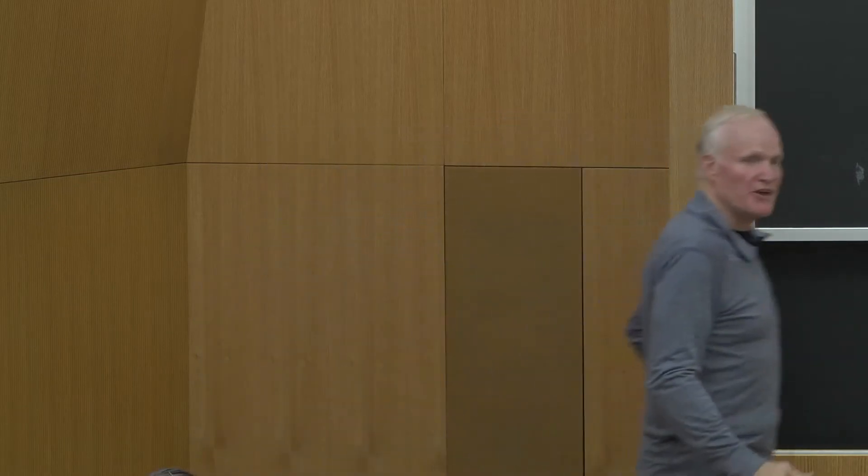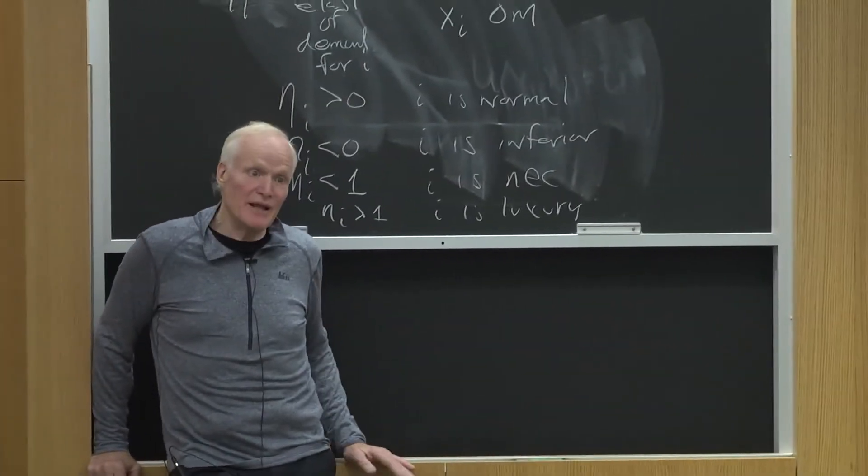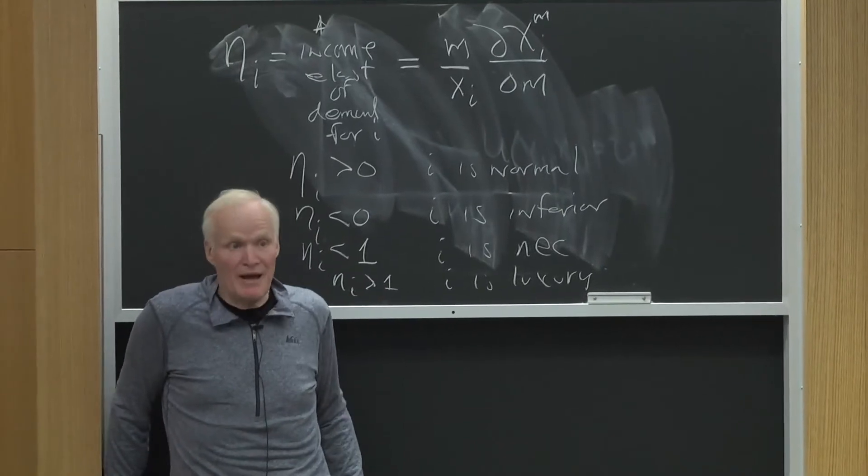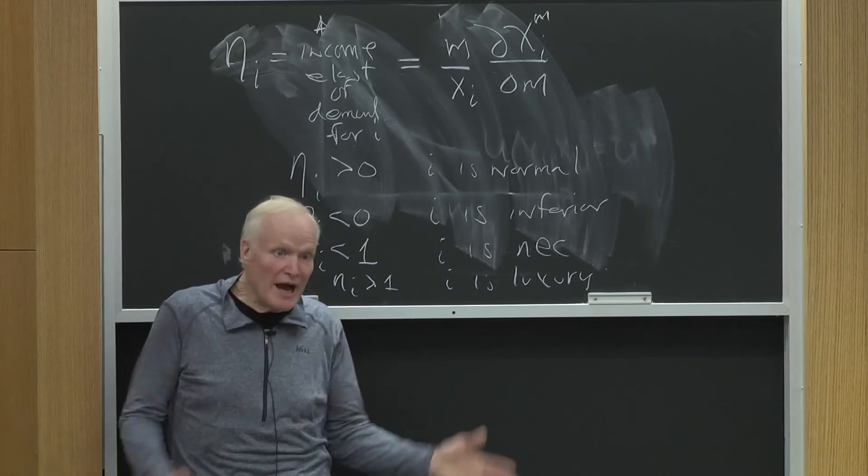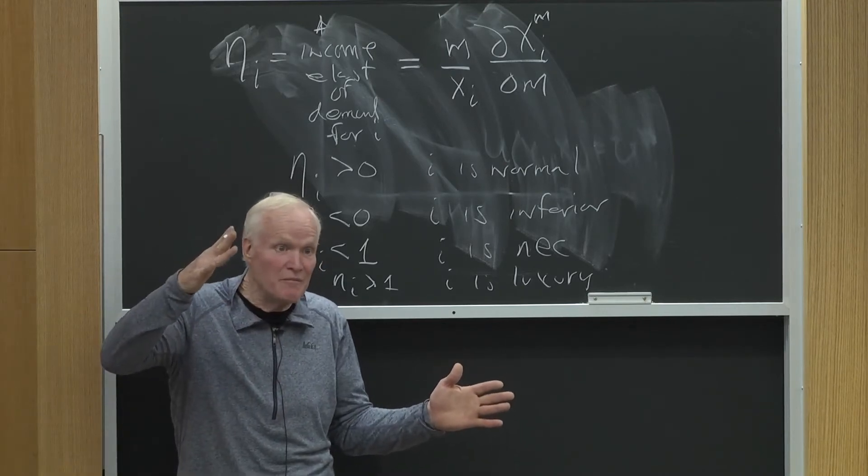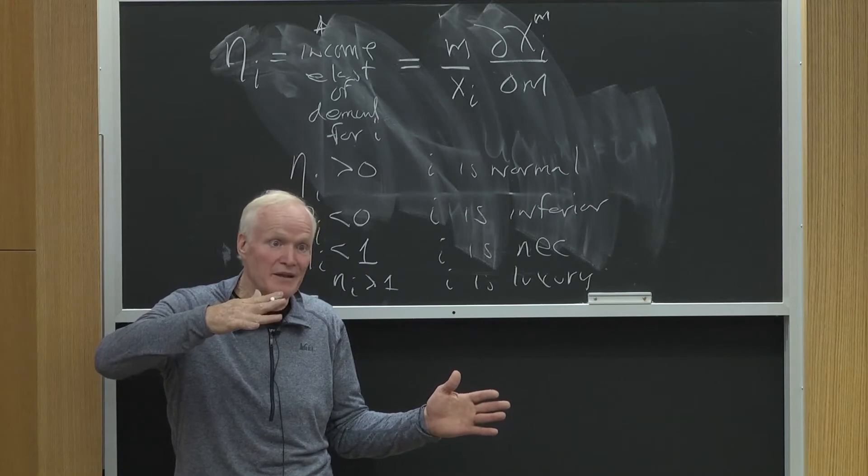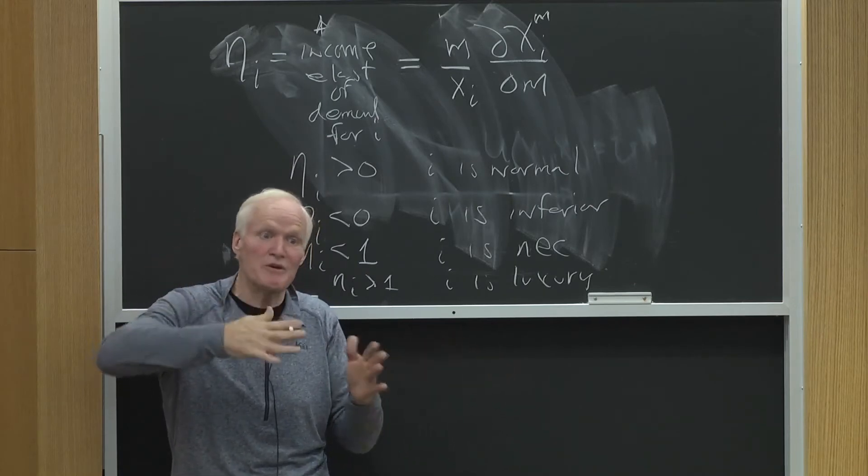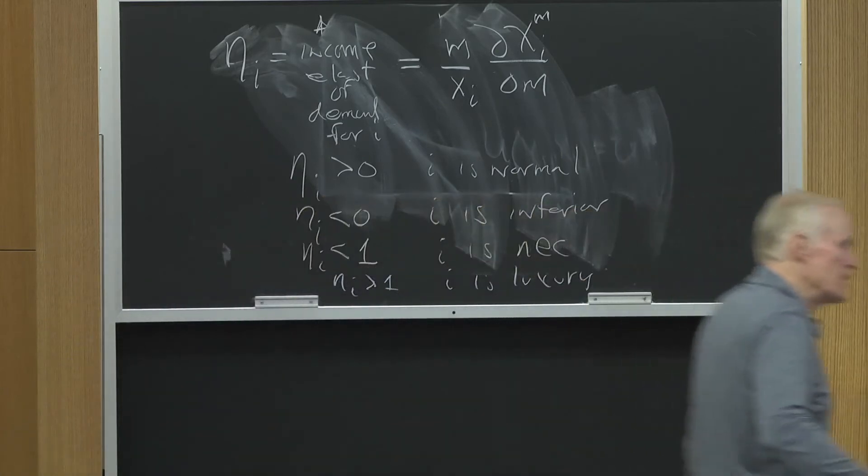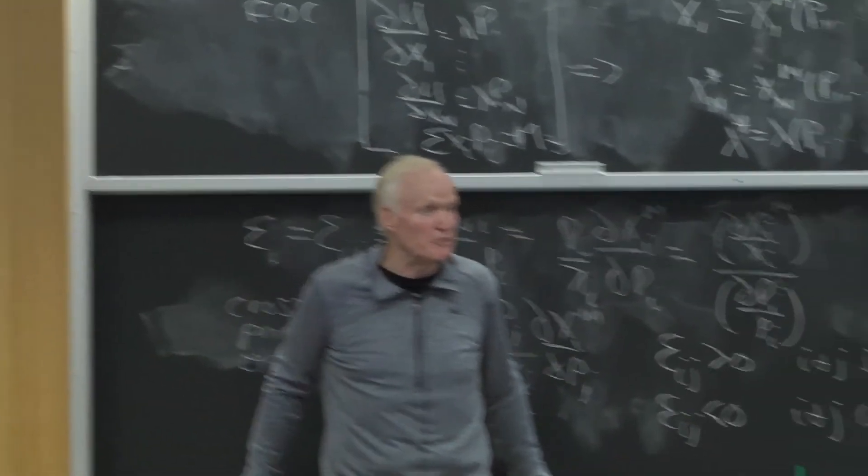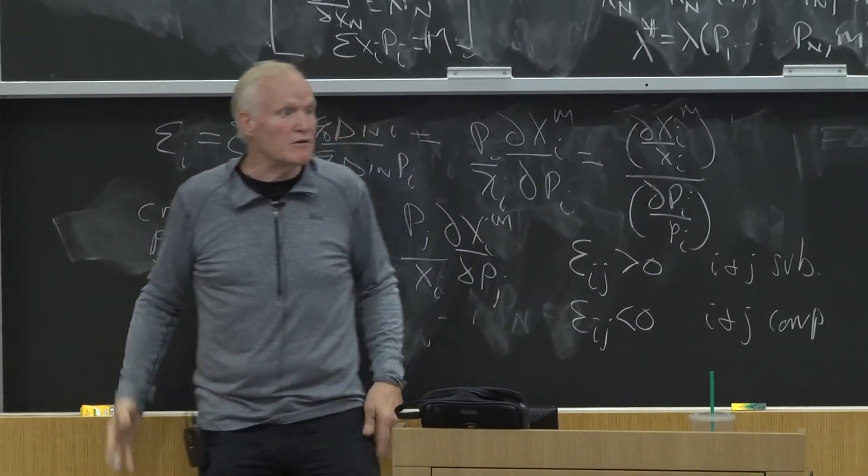Think about it as your income goes up 10%. You can't buy 9% more of everything - you'd have money left over. You can't buy 11% more of everything - you wouldn't have enough money. So you have to have some at least 10 and some less than or equal to 10. It can all be 10. You could increase everything 10%, which gives you income elasticity of one for everything. You could increase some 5 and some 15 and have them average out to give you the 10%. Couldn't have them all be negative, right?